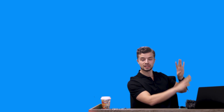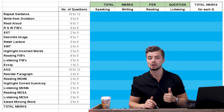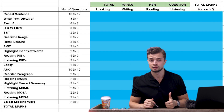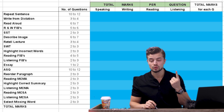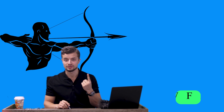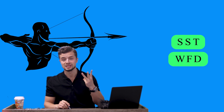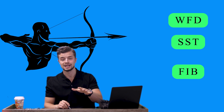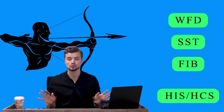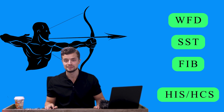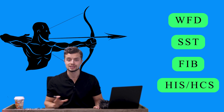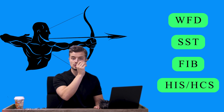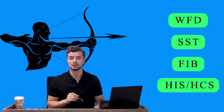The second thing you need to worry about is the marking distribution. Earlier I showed you a table about what questions you need to focus on. Number one — the king — is Write from Dictation. Number two is Summarize Spoken Text. Number three is Fill in the Blanks. Number four is Highlight Correct Words and Highlight Correct Summary, and then the other smaller questions like MCQs.